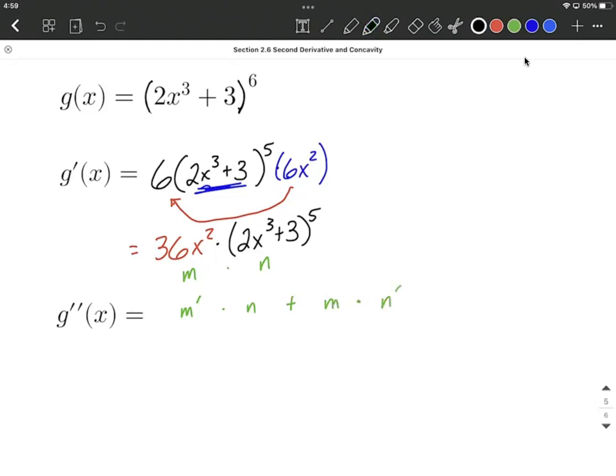One at a time here, the derivative of m, which I'm treating as that 36 x squared, that derivative is going to be 72 x to the first power, and then we bring along that second function, the big set of parentheses, 2 x cubed plus 3, raised to the fifth power.